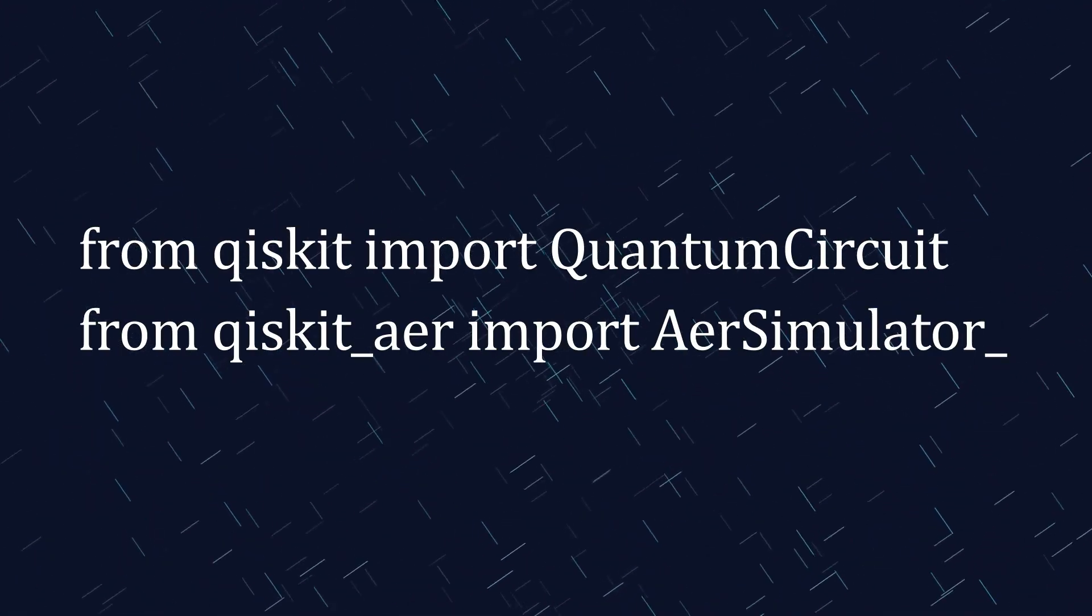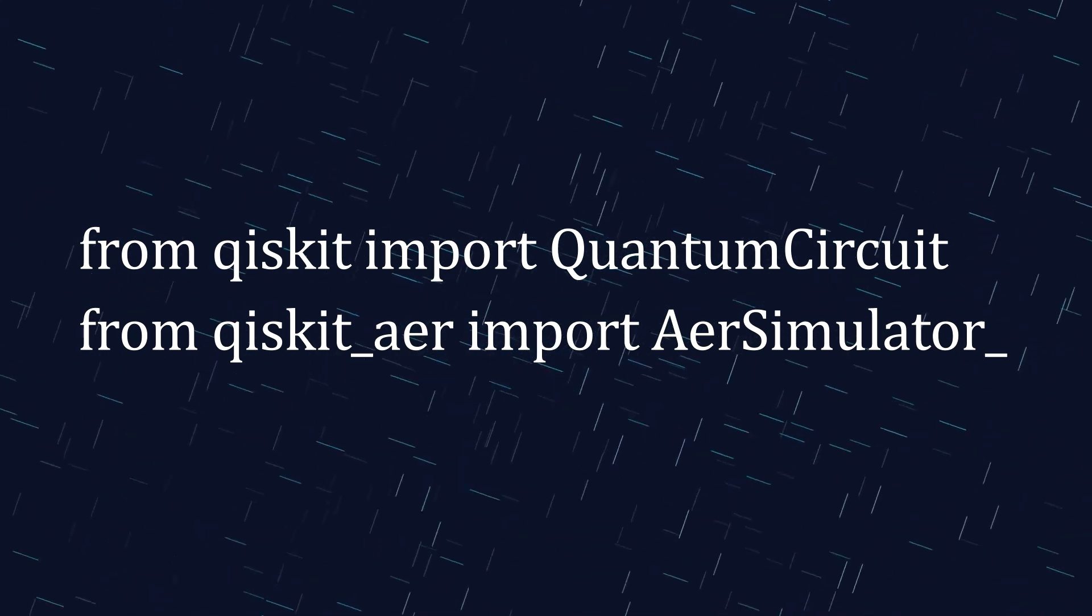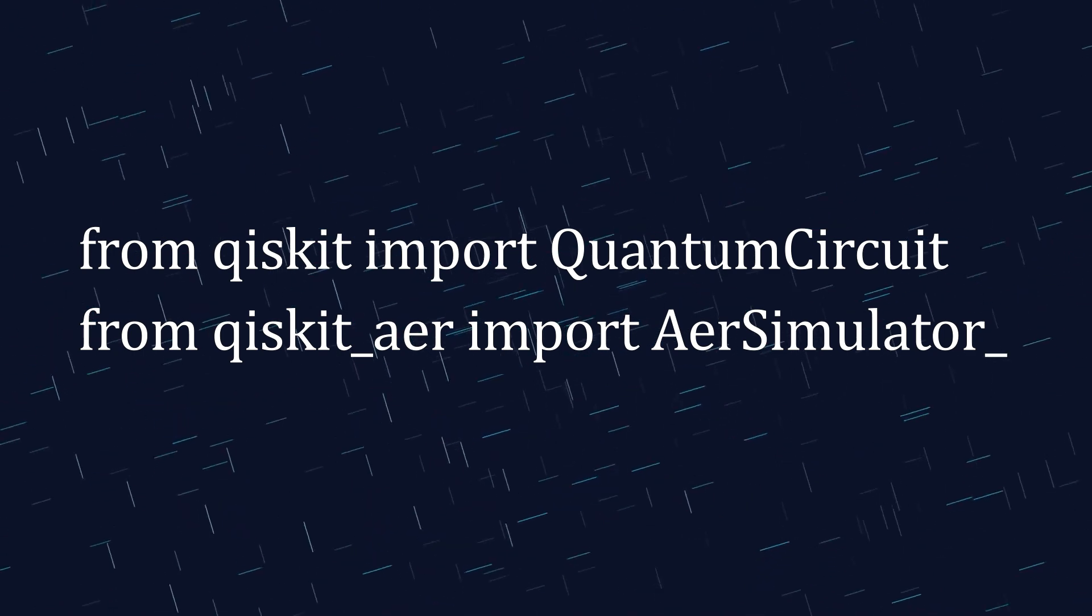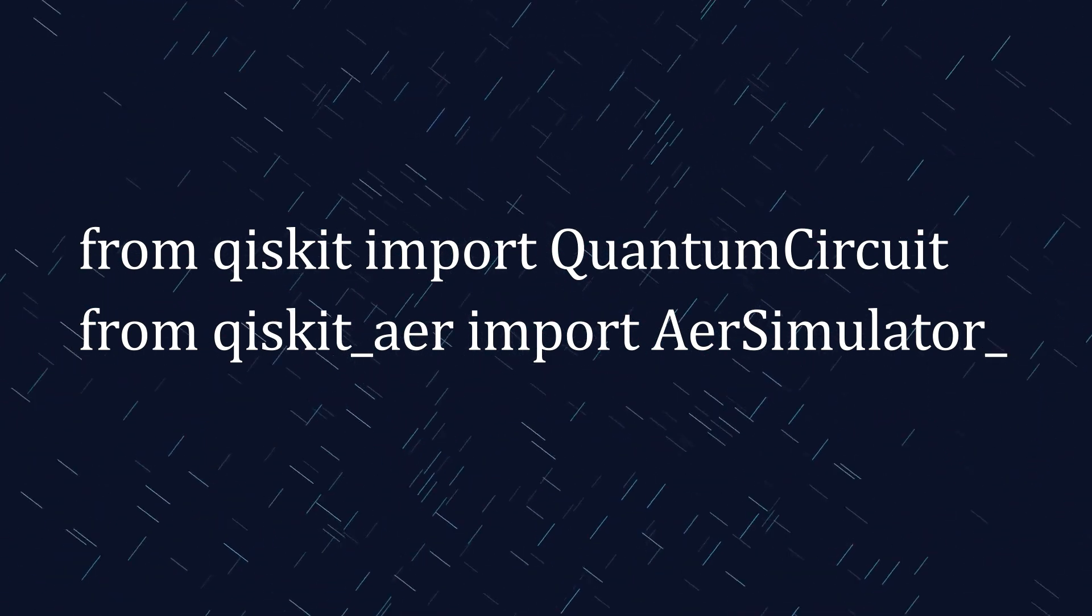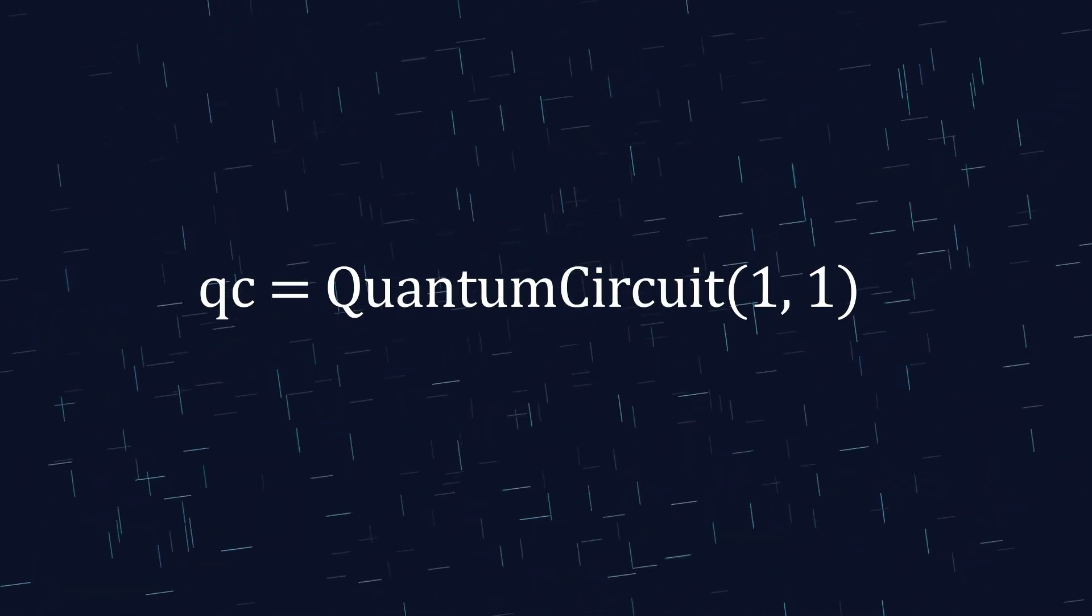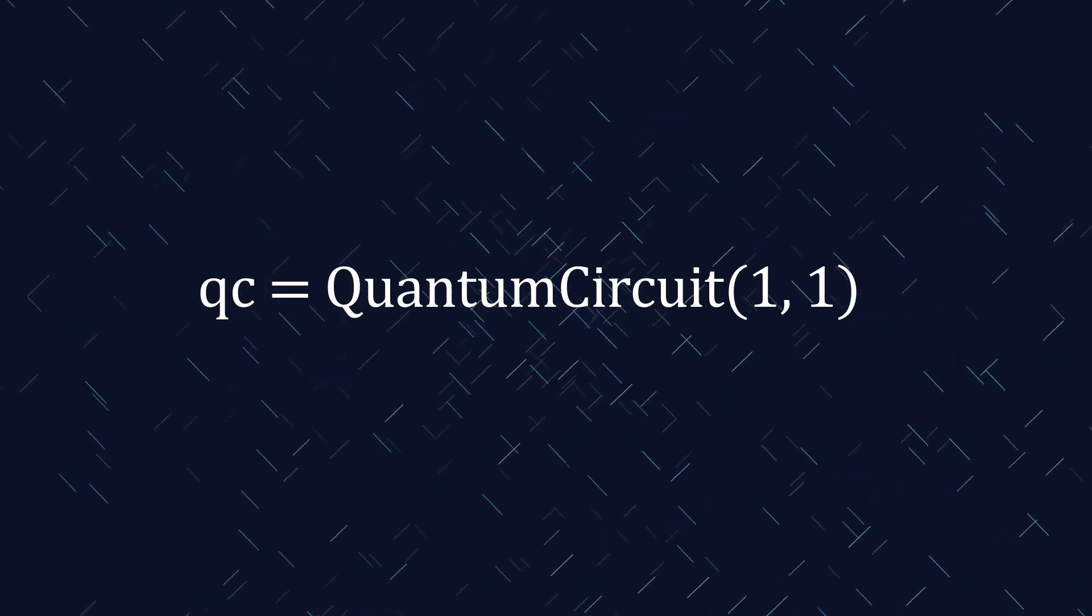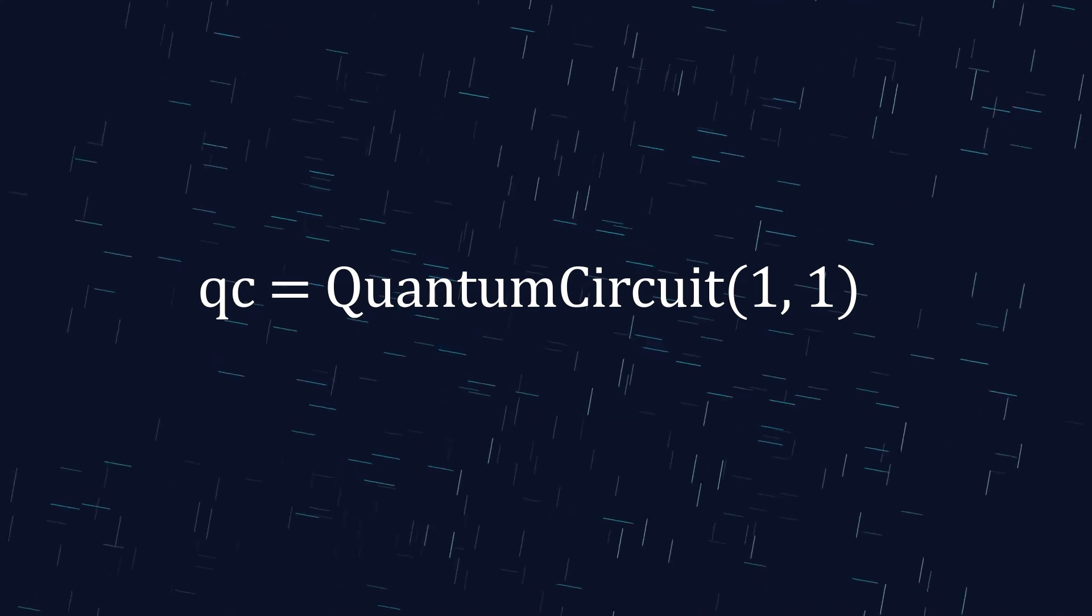First we bring in two essential components from Qiskit. One is the QuantumCircuit, which allows us to build and manipulate quantum circuits. The other is the Aer simulator, which simulates our circuits on a standard computer so we can see their outcomes right away. Next we create a circuit with one qubit and one classical bit. Imagine the qubit as our quantum coin, while the classical bit records its final state, either heads or tails.